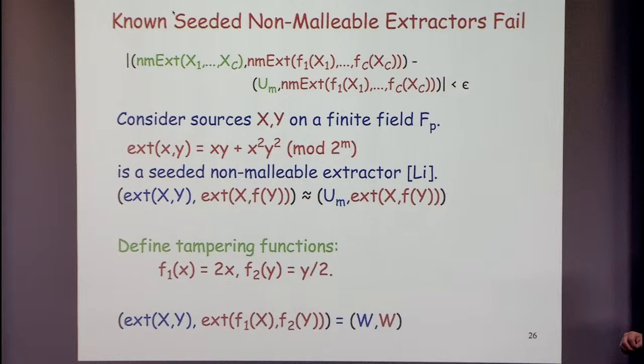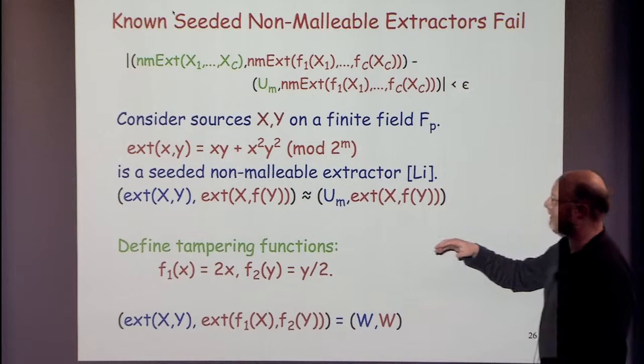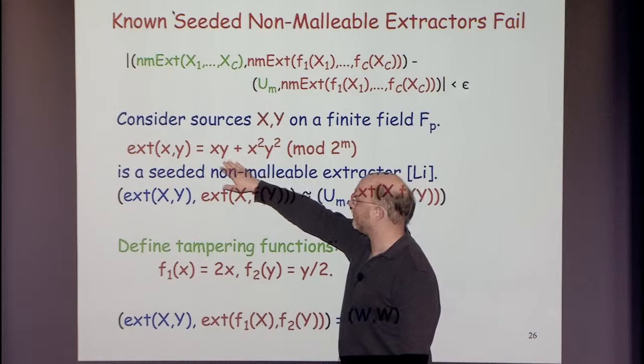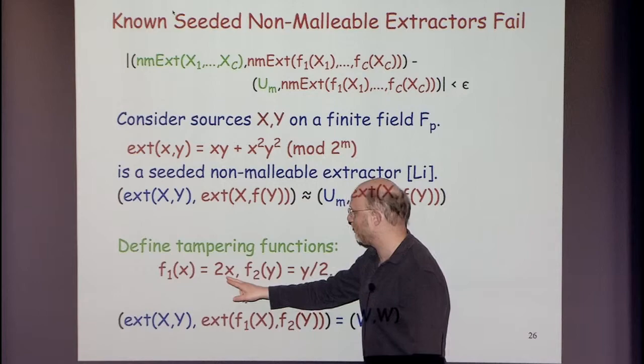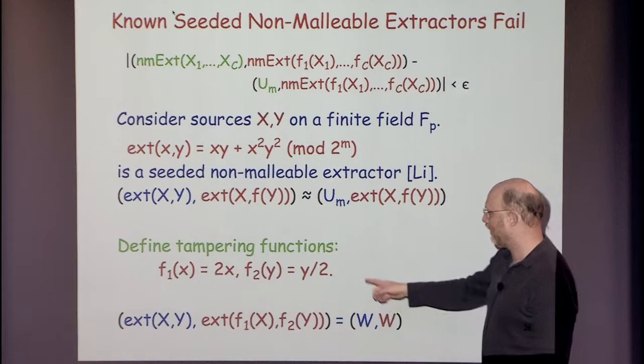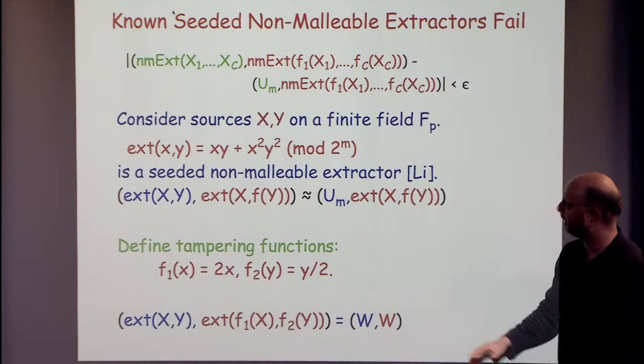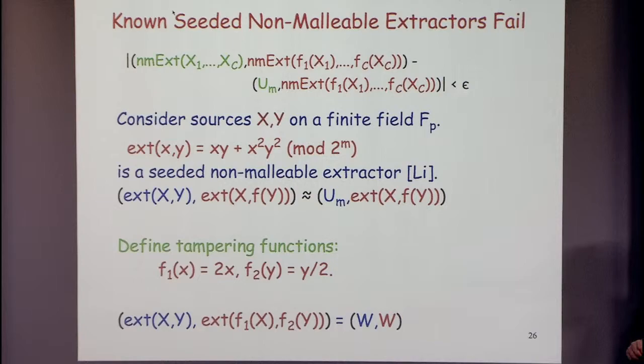Just to get a sense of why this is hard: here's something that fails. There's a seeded non-malleable extractor that fails in this setting because the adversary could corrupt x to 2x and corrupt y to y/2 — then the extractor on these corrupted inputs equals the extractor on x and y. So it's hard to think of candidates here.